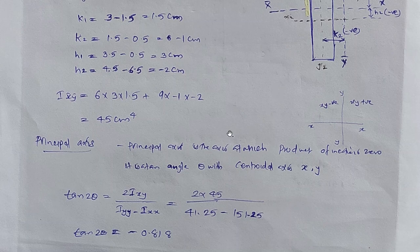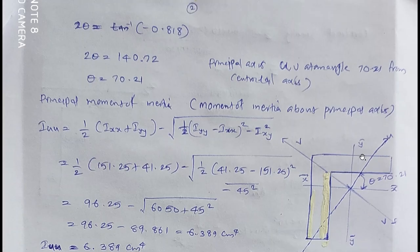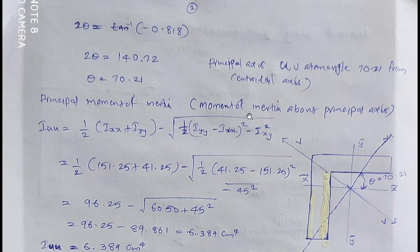From that equation, the product of inertia Ixy is about the centroidal xy axes. Iyy is the moment of inertia about the centroidal y-axis, and Ixx is the moment of inertia about the centroidal x-axis. That angle is theta. When we get the angle theta, we get the principal axis. IUU is the principal moment of inertia about principal axis at angle theta.